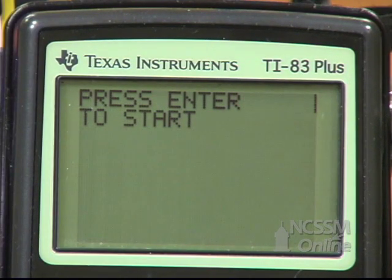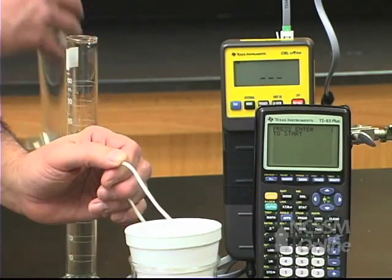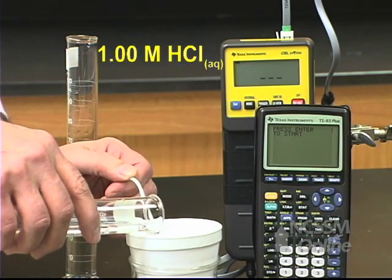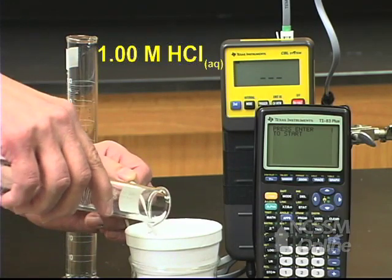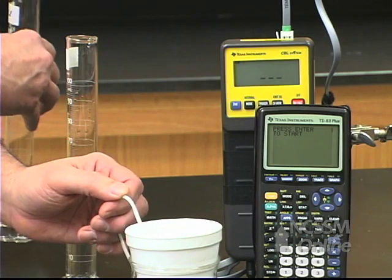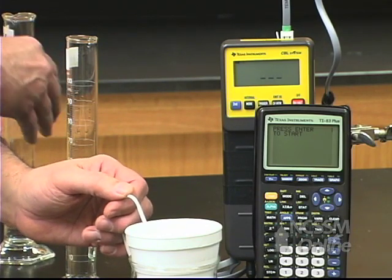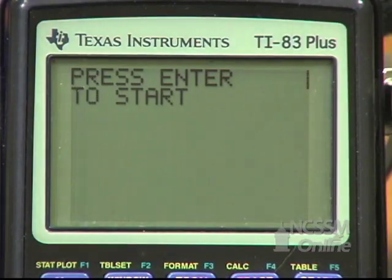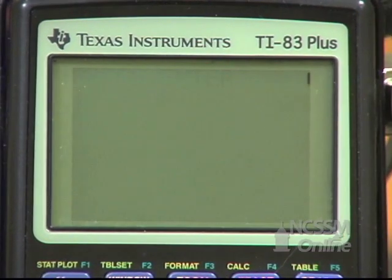What we're going to do is put your HCl solution into the calorimeter. Put the probe in the calorimeter. Make sure that the tip of the probe is underneath the solution. Press enter on the calculator.